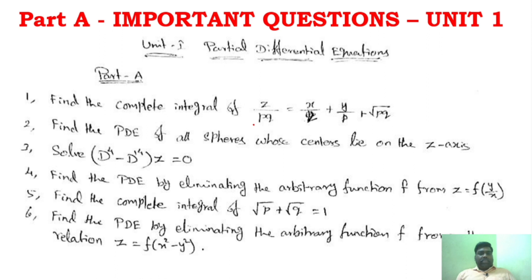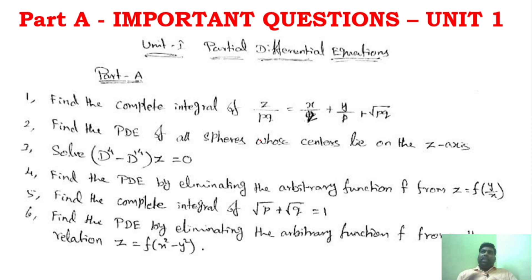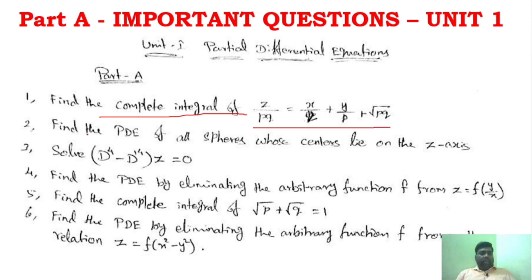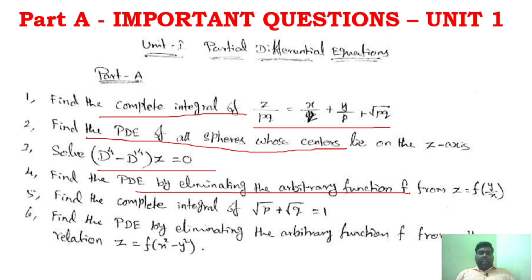We will start with important questions. For Part A, Unit 1: find the complete integral of a given expression; find the PDE of all spheres whose centres lie on the Z-axis; solve a particular equation; find the PDE by eliminating arbitrary constants; and find the PDE by eliminating the arbitrary function for a particular relation.